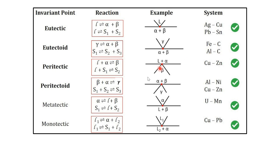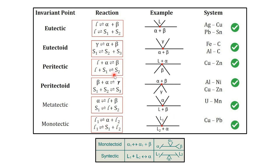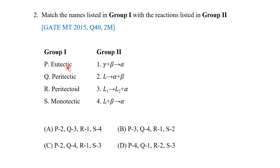Other reactions include metatectic, where α reversibly changes into liquid + β, and syntactic reactions where two liquids reversibly change into one. For monotectic, one liquid gives another liquid plus a solid. There are also less commonly found reactions like monotectoid (two solids, three solids) and syntactic (two liquids combining reversibly into one solid phase). Now matching the given options: eutectic — liquid gives α + β, which corresponds to option A or C.